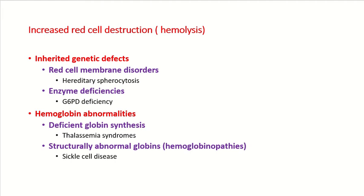Among the causes of hemolysis or hemolytic anemia, the first group is inherited genetic defects, which include red cell membrane disorders, hereditary spherocytosis, and enzyme deficiency such as glucose-6-phosphate dehydrogenase deficiency. Then there are hemoglobin disorders — decreased synthesis of globin chains leading to thalassemia, and structurally abnormal globins causing sickle cell anemia.